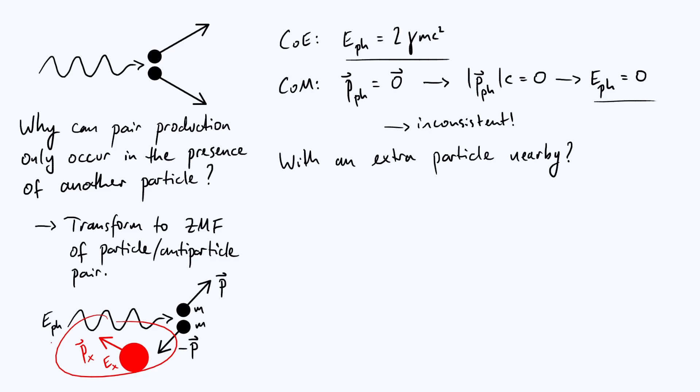It's got some arbitrary momentum p_x and some arbitrary energy e_x in the zero momentum frame of the particle-antiparticle pair. Let's repeat the same analysis, do conservation of energy and momentum with that extra particle, and see how this allows the process to happen.